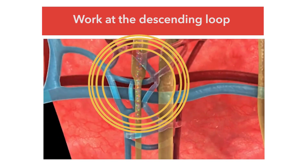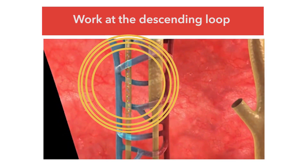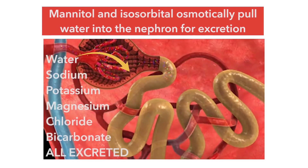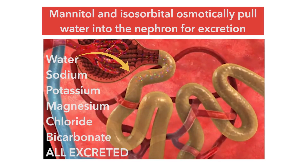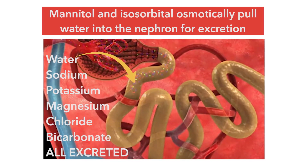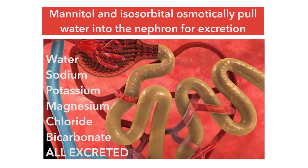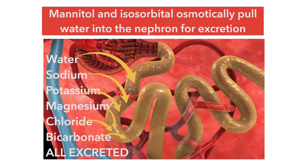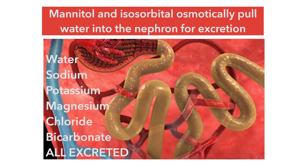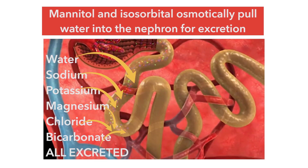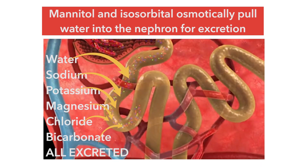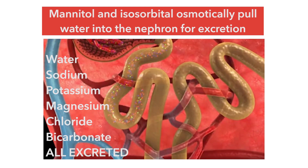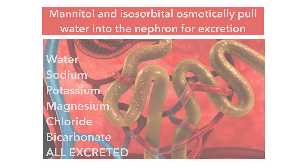And there, they're going to have a very, very strong osmotic pull of water into the tubule, and along with that, there's going to be a loss of sodium, a loss of potassium, a loss of magnesium, a loss of chloride, and a loss of bicarbonate. So a lot of water is going to be excreted, but a lot of electrolytes are going to be excreted as well.